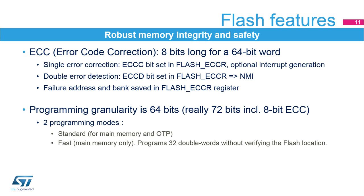Note that the bootloader uses resources in SRAM 1 from address 0x20000000 to address 0x20001000, so this SRAM area must not be used by the application when the BFB2 option bit is set. The flash memory embeds an error code correction function to ensure robust memory integrity and safety. The ECC is 8 bits long for a 64-bit word.